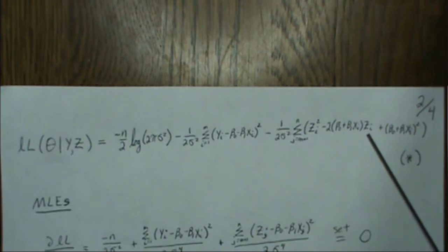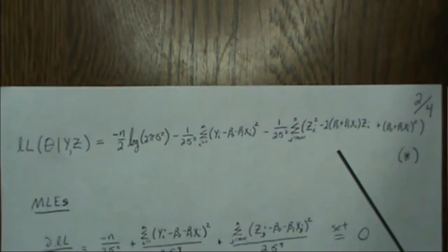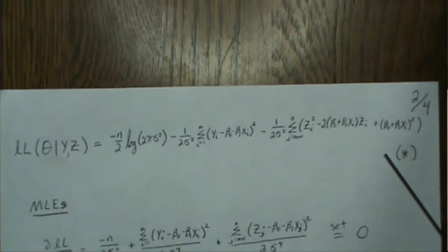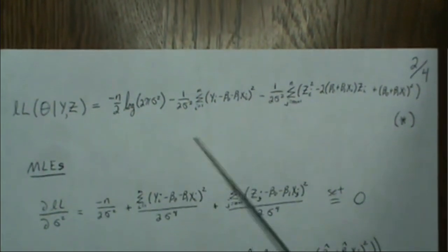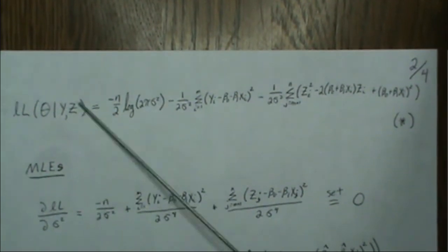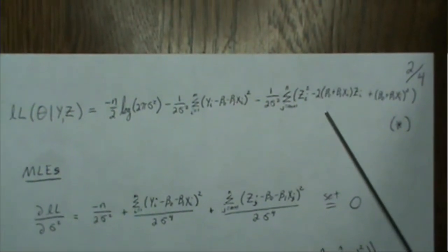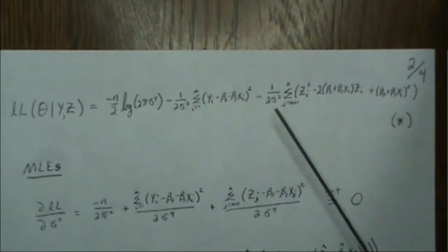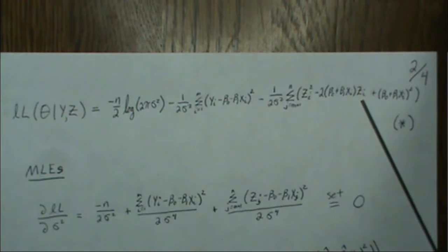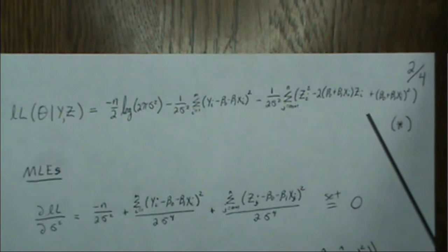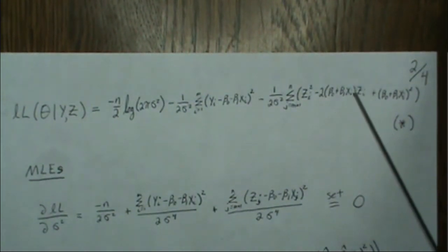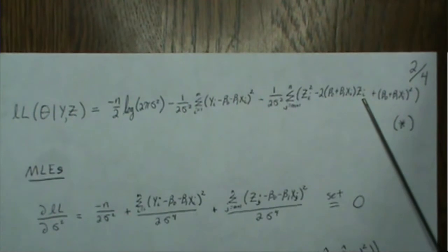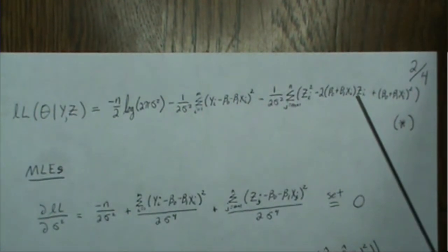If we could observe all the data, we could calculate the maximum likelihood estimates directly. I put a star on this expression because when we take the maximum likelihood with respect to beta_0, beta_1, and sigma squared, it doesn't matter what zi is as long as it's constant and doesn't involve those parameters. So if we substitute an estimate of zi, the maximum likelihood estimates have the same form.